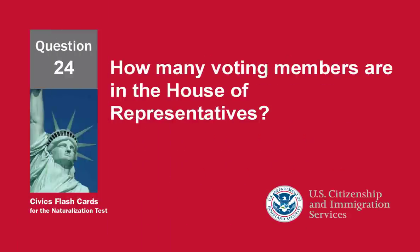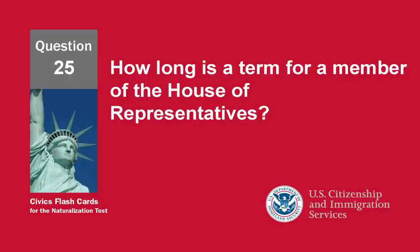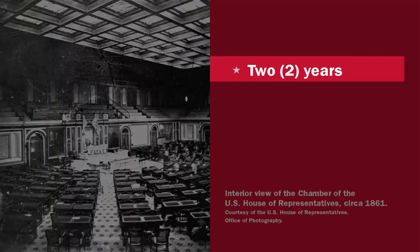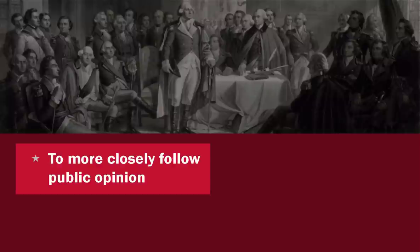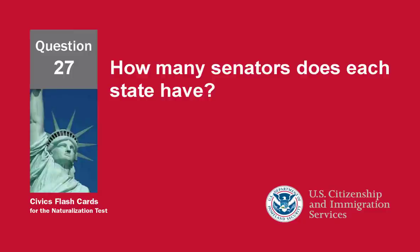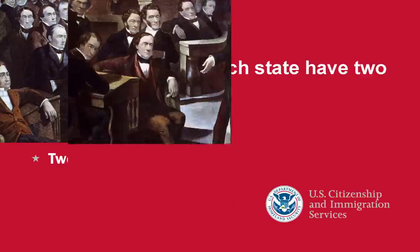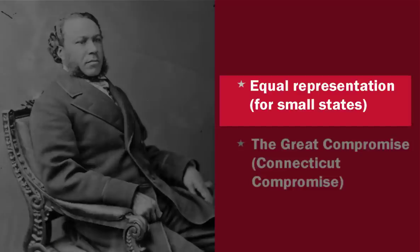How many voting members are in the House of Representatives? Four hundred thirty-five. How long is a term for a member of the House of Representatives? Two years. Why do US Representatives serve shorter terms than US Senators? To more closely follow public opinion. How many Senators does each state have? Two. Why does each state have two Senators? Equal representation.